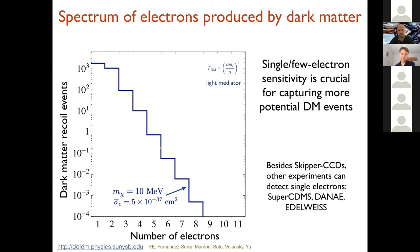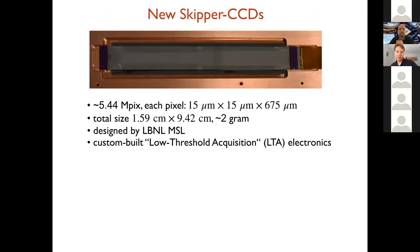So the new Skipper CCDs have 5.4 million pixels. Each pixel is 50 micrometer square big and 675 micrometer thick, about 2 gram. They're designed by Lawrence Berkeley National Lab Microsystems Lab. We have custom-built low-threshold acquisition electronics. The CCD can be read out through four different corners. The CCD can be split into quadrants and you can read out each quadrant separately. By measuring the charge multiple times, you're able to reduce the noise of the measurement by a lot.